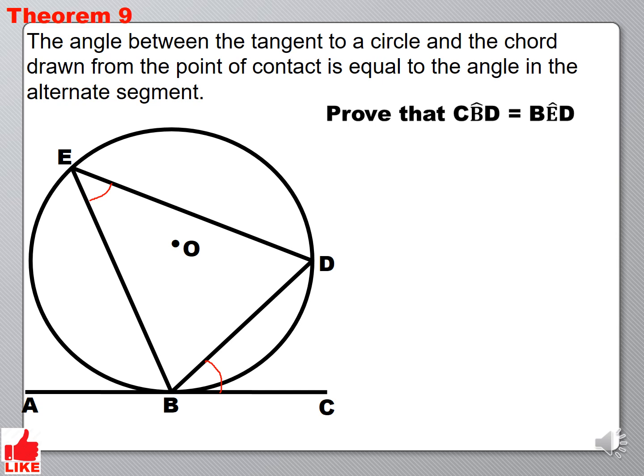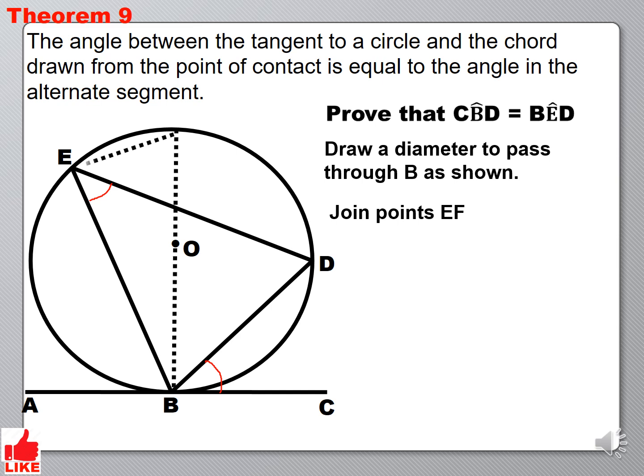So now to prove that these two angles are equal to each other, we have to do some construction first. The construction that we do is we draw a diameter from point B passing through the center. Important for us is that we draw our diameter from the point where the tangent is touching the circle. So the tangent ABC is touching the circle at point B, which means we are going to connect point B to the center of the circle up to the circumference.